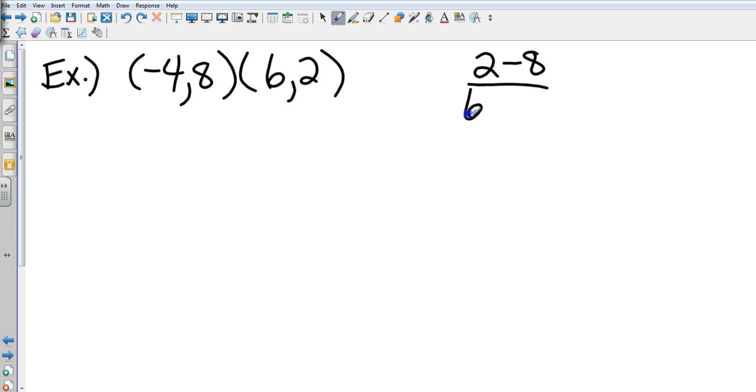all over 6 minus negative four. So 2 minus 8 is going to be negative six, 6 minus negative four is going to be ten, and then I reduce that—that's going to be negative three-fifths.